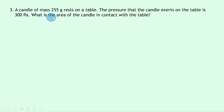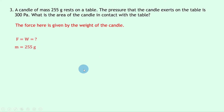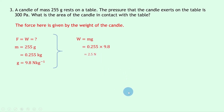Question 3 says that a candle of mass 255 grams rests on a table. The pressure that the candle exerts on the table is 300 pascals. What is the area of the candle in contact with the table? Just like in question 1, the force here is given by the weight of the candle. The mass is 255 grams, which we rewrite as 0.255 kilograms, and g is 9.8 newtons per kilogram. Using w equals mg, we get 0.255 times 9.8, which gives an answer of 2.5 newtons.